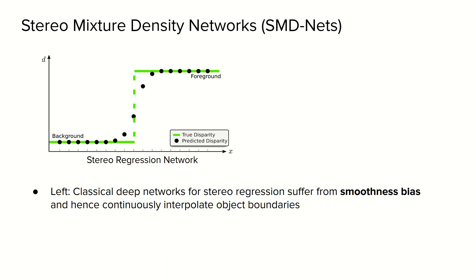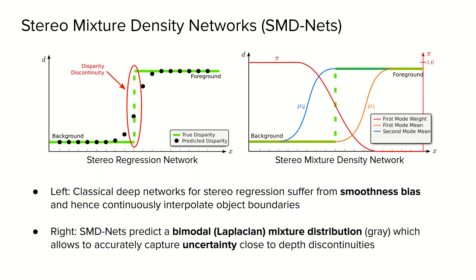Here we illustrate the differences between classical deep networks for stereo regression and our proposed method. For clarity, we visualize the disparity for a single image row. On the left, we can see an example of a standard network that suffers from smoothness bias and continuously interpolates object boundaries. The best that this model can do is to predict at discrete locations the black dots that represent the estimated disparities that are smoothly transitioning from the foreground to the background. On the right, instead, we show our mixture density network that estimates a bimodal mixture distribution over disparity values, which can be queried at any continuous spatial location x.